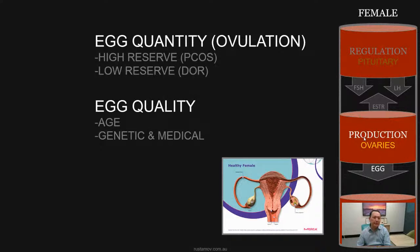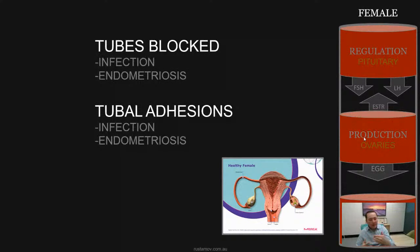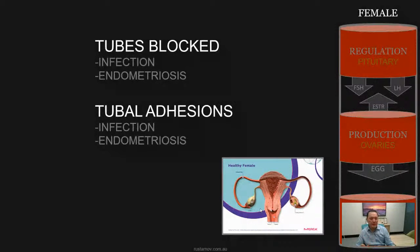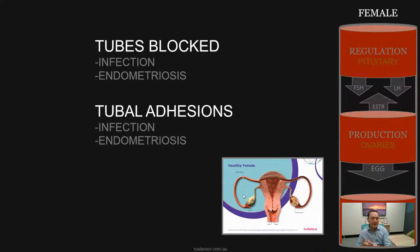The third level is the delivery of the gametes or eggs, which is the function of the fallopian tubes. This is linked to disease of the fallopian tubes, which comes in two different forms: one is a blockage of the tube, and the second is adhesions or scar tissue formation around the tube, which can cause problems with tube function. Both of these conditions are usually linked to past infection or endometriosis.